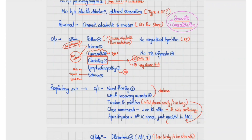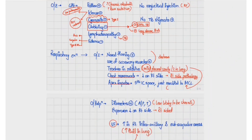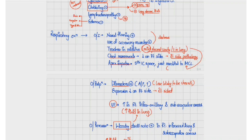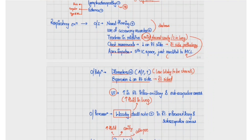On respiratory examination, nasal flaring and use of accessory muscles suggest the patient is in distress. Trachea in midline suggests either a pathology within the lung or a pleural cavity pathology not large enough to push the trachea. Decreased chest movements on the right side suggest a right-sided pathology. Normal diameters suggest an acute rather than chronic pathology. Decreased expansion on the right side further confirms a right-sided pathology.